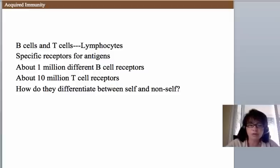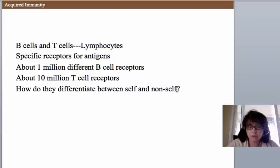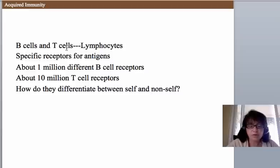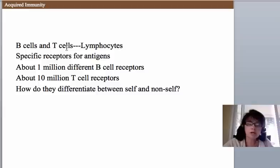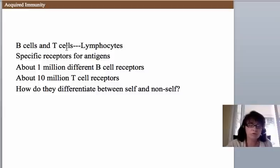Your immune system has the ability to differentiate between self and non-self. And when it does encounter non-self, your B and T cells — your lymphocytes — are able to amplify the correct one and make the appropriate effector cells. The B cell that's going to make the antibodies is called an effector cell, and so is the T cell that's going to either help or kill a virus-infected cell.